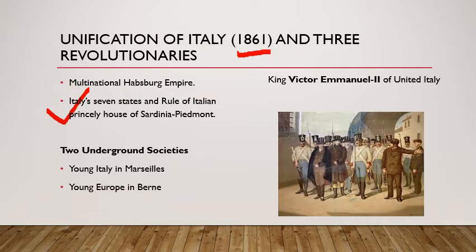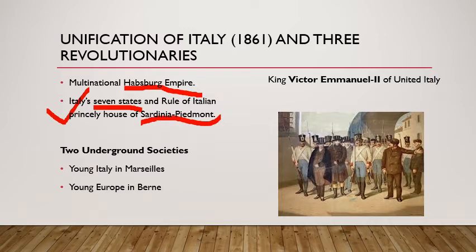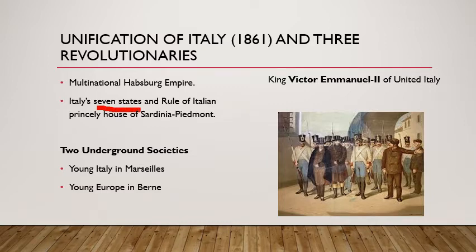Italy had a long history of political fragmentation. Italians were scattered over several dynastic states as well as the multinational Habsburg Empire. During the middle of the 19th century, Italy was divided into seven states, of which only Sardinia was ruled by an Italian princely house. The north was under Austrian Habsburg, the center was ruled by the Pope, and the southern regions were under the domination of Bourbon kings of Spain. Even the Italian language had not acquired one common form and still had many regional and local variations.